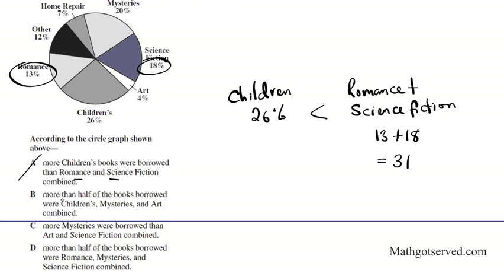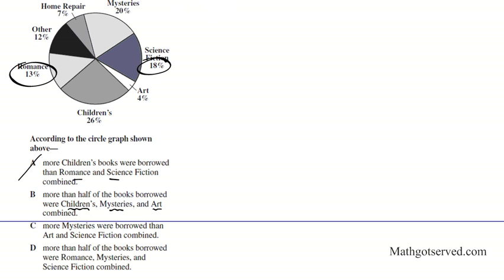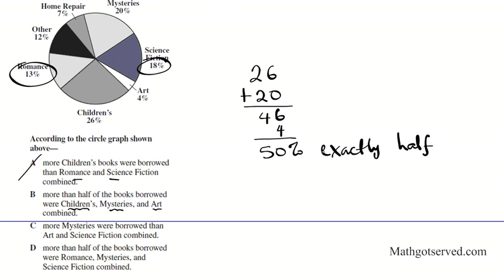Let's move on to Option Letter B. It says, More than half of the books borrowed were children's, mystery, and art combined. We know that half is 50%. So if I combine children's, mystery, and art, do I get more than 50%? Children's is 26 plus mystery is 20, add that up first, we have 46. And then art is 4%. Add that as 50. So this is exactly half. But the question says more than. More than half has to be greater than 50%. 50% is not greater than 50%. So that means this is false, exactly half.